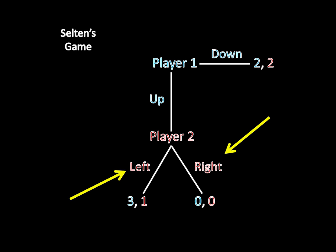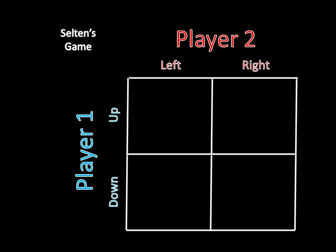Then we look at the combination of moves that player two has available. And she only has left or right. So that means there will only be two columns as well. And that gives us everything we need except for the payoffs.